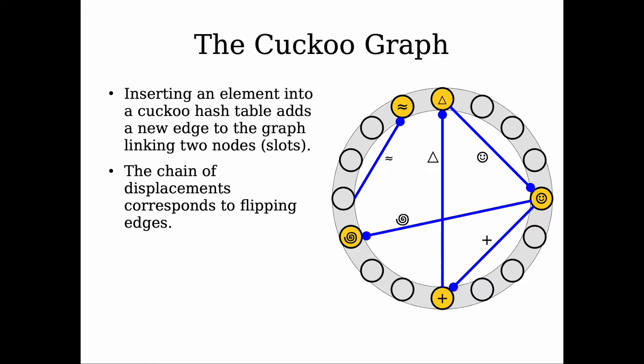Whenever we insert an element into our hash table, we have a new edge in the corresponding cuckoo graph. And suppose we add a new symbol in our hash table that coincides with the location of another symbol. What we will do is evict that symbol.